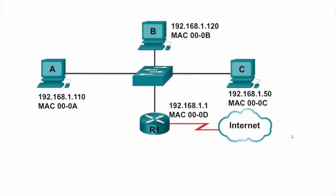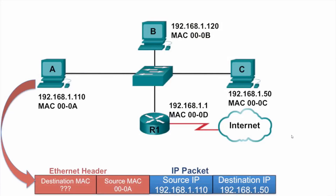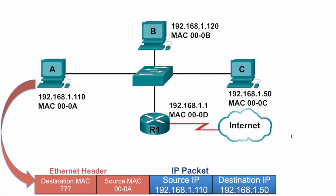In this video we are going to see PCA send an ARP request for the MAC address of PCC. PCA has an IP packet with the source IP address of itself, 192.168.1.10, and the destination IP address of PCC at 192.168.1.50. So it needs to know what the destination MAC address will be.